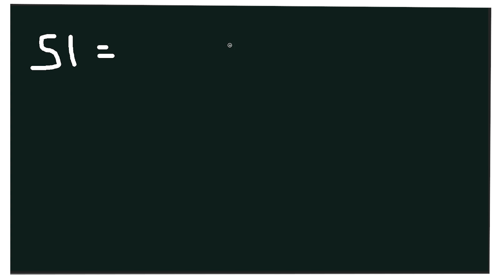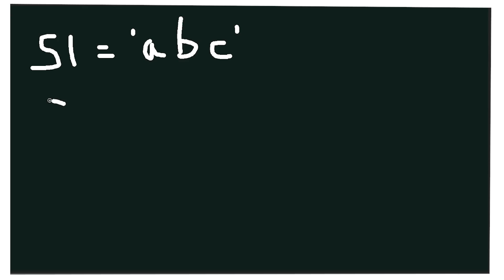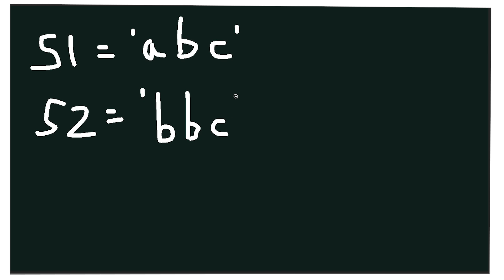So let's look at what we want to do. We're going to have two strings — let's call them s1, which is going to equal something like 'abc', and then we're going to have another string, s2, which will be something like 'bbc'. The Hamming distance between these two is obviously one, because the 'b' and 'c' are the same but the 'a' and 'b' are different.